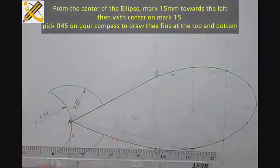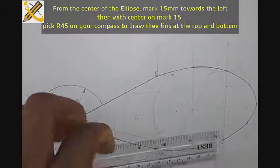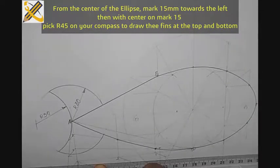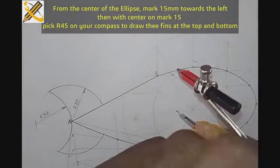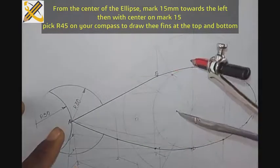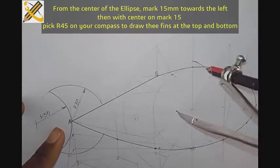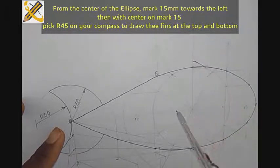So from that mark 15, I pick radius of 45. Now I am picking that, this radius 45. Then the second fin also.